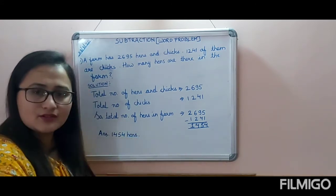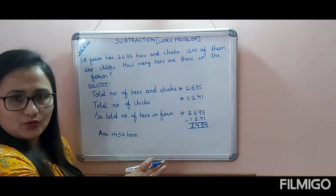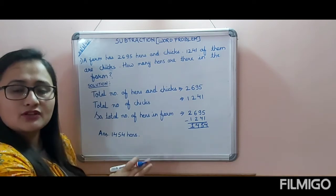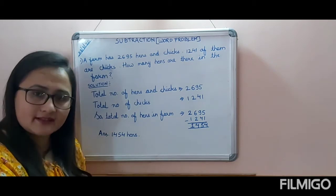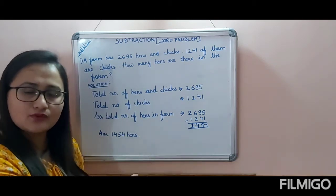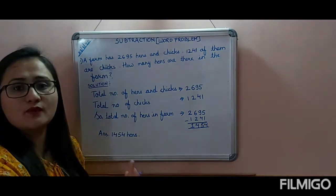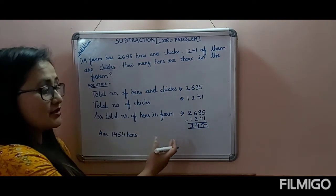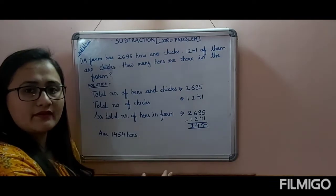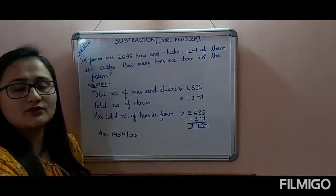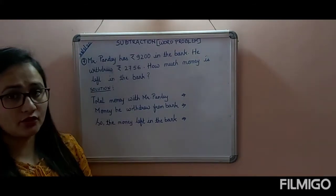So your answer is 1454 hens. This is how you write your solution neatly in your notebook, just as I taught you on the board. Now let's move on to the next example. I will teach you one example with carryover — how to do subtraction in a word problem with carryover, as I taught you before.